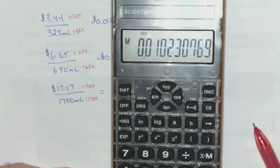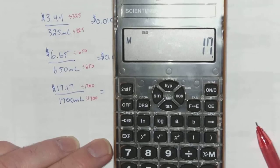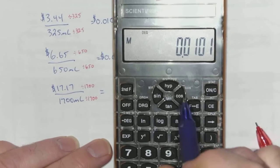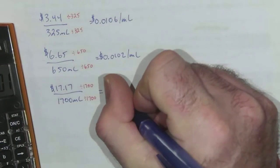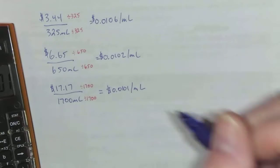So $17.17 divided by 1700 milliliters: 0.0101. So that's $0.0101 per milliliter.